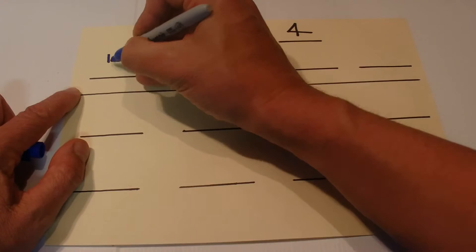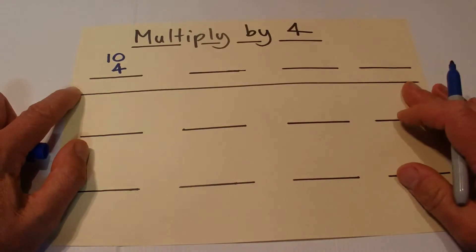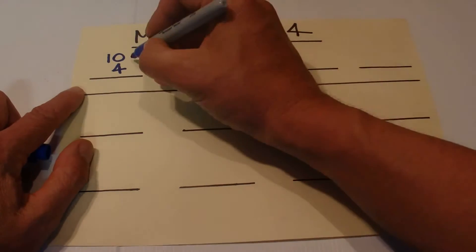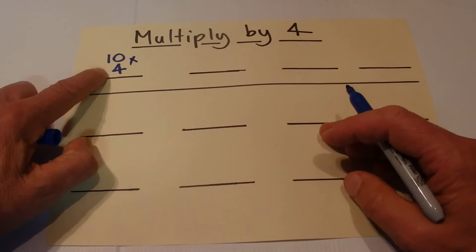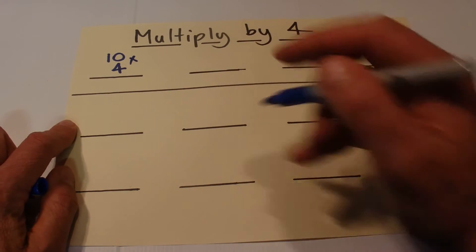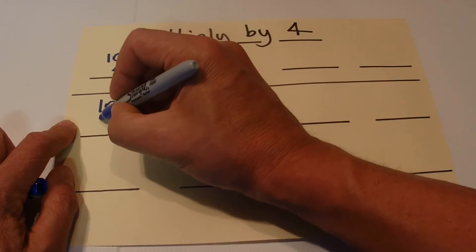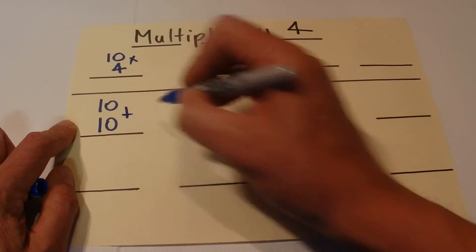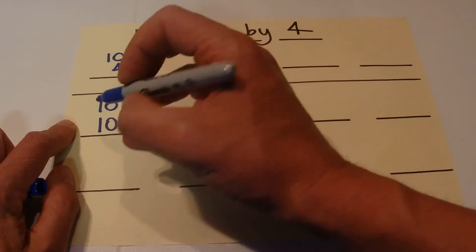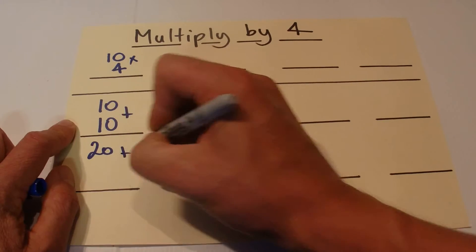To show you how that works, the first one we're going to do is 10 times 4. If you want to multiply by 4, that is the same as doubling the number and then doubling it again.